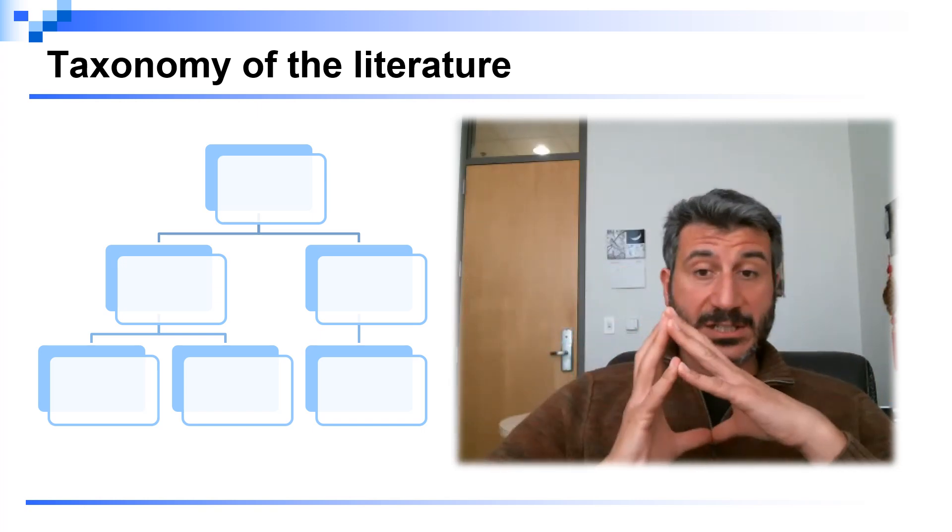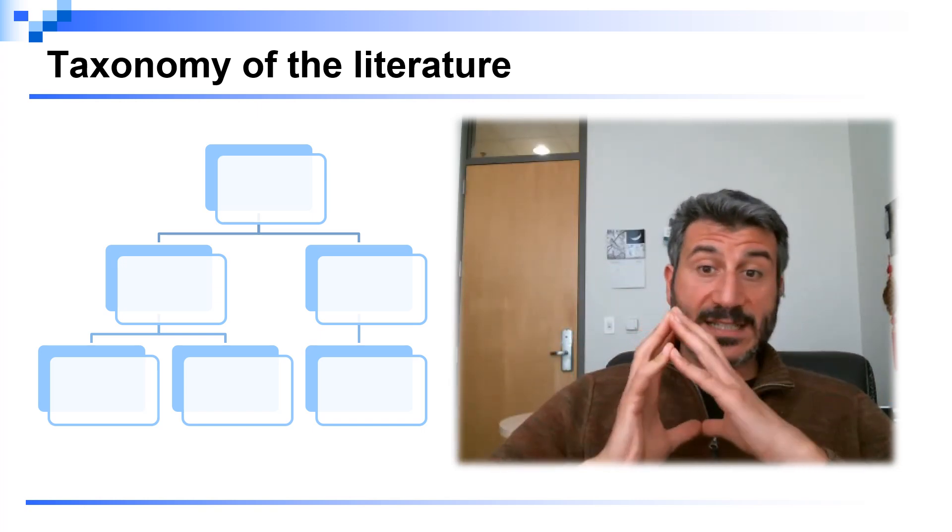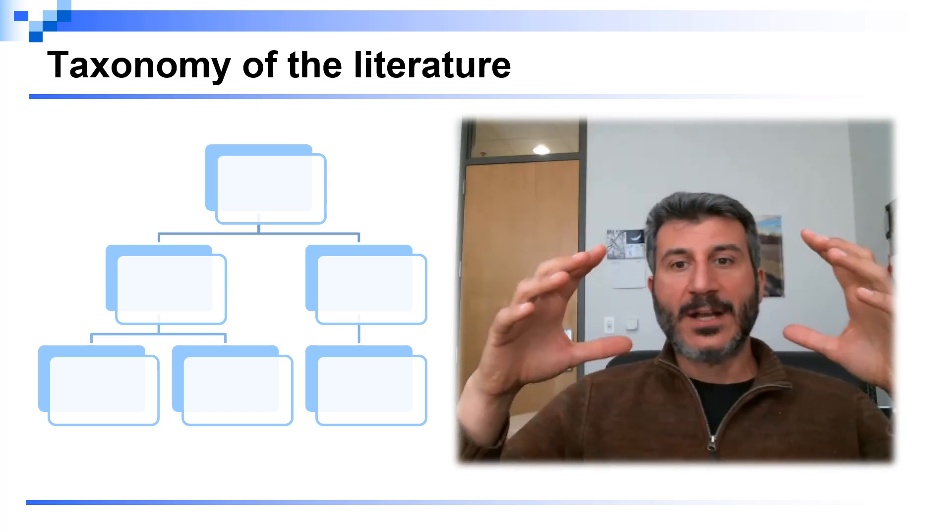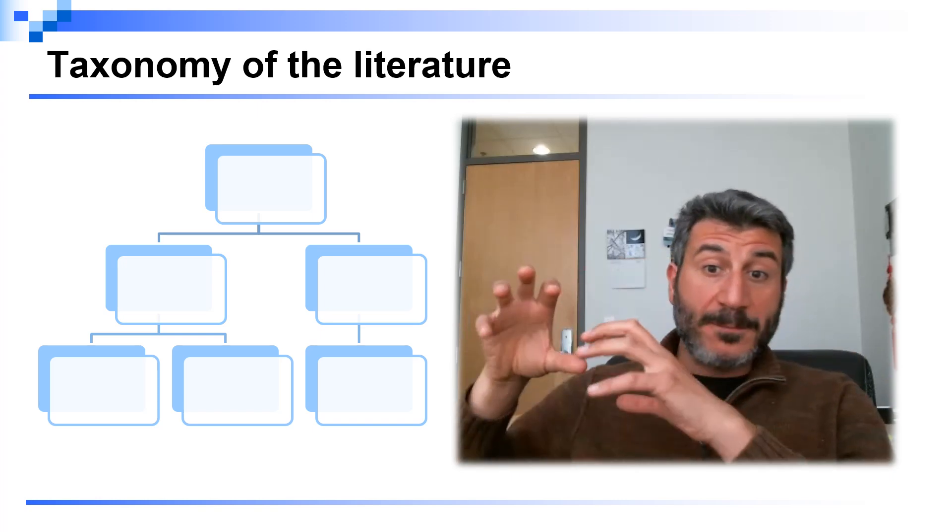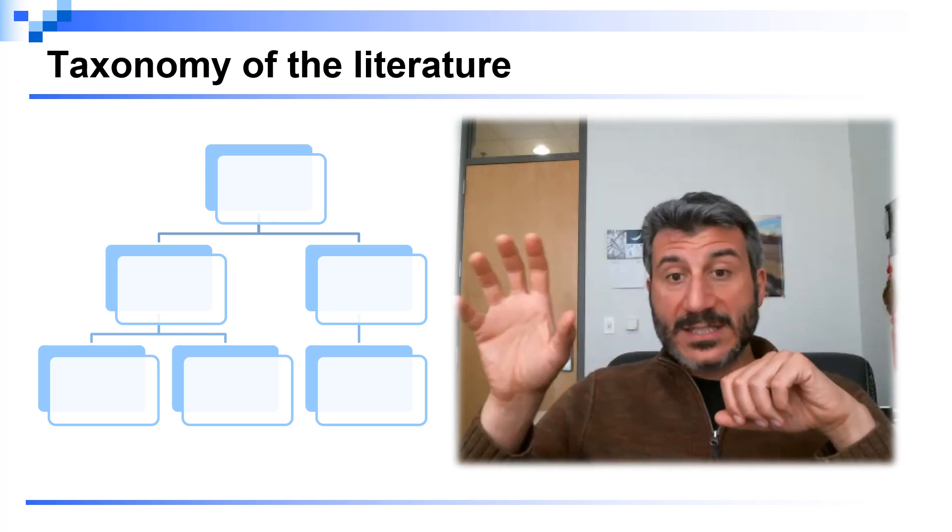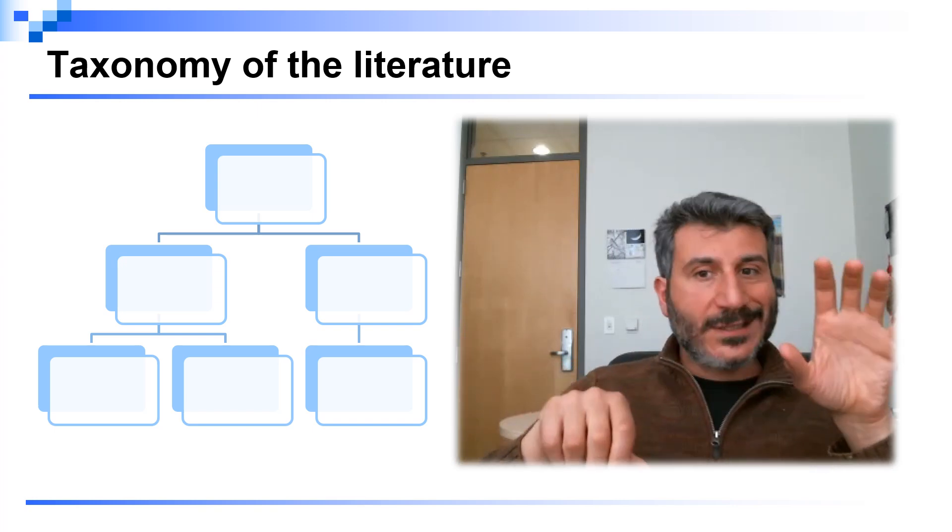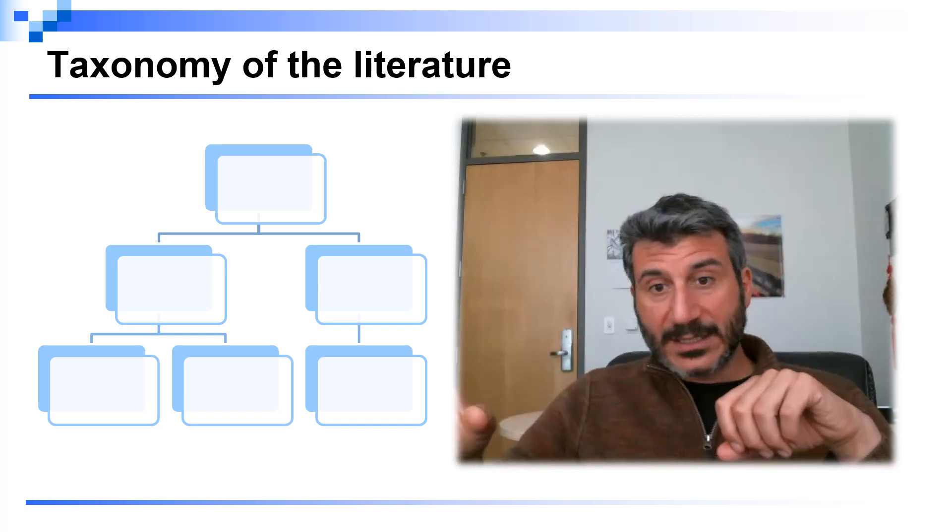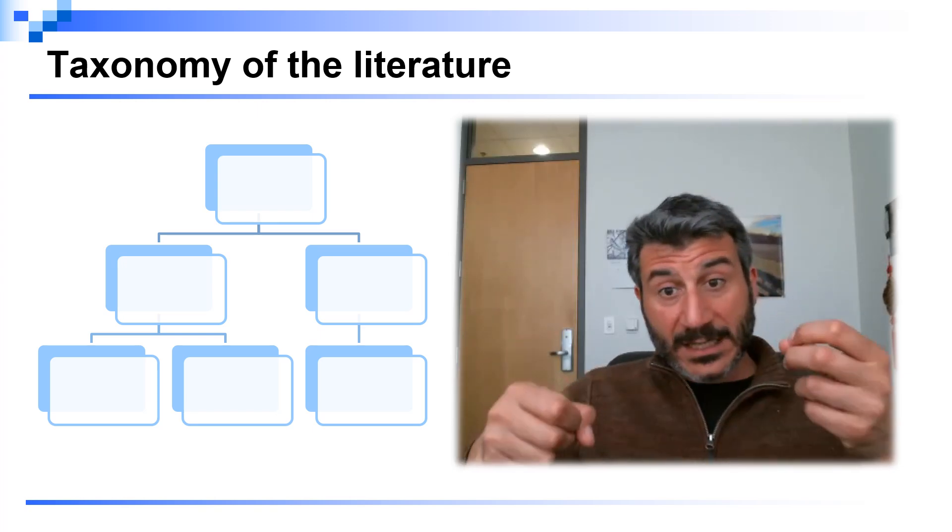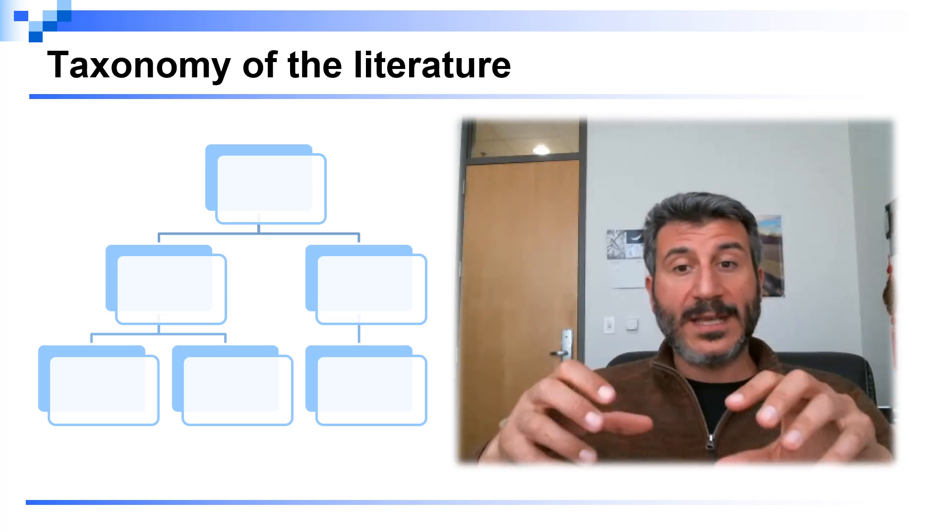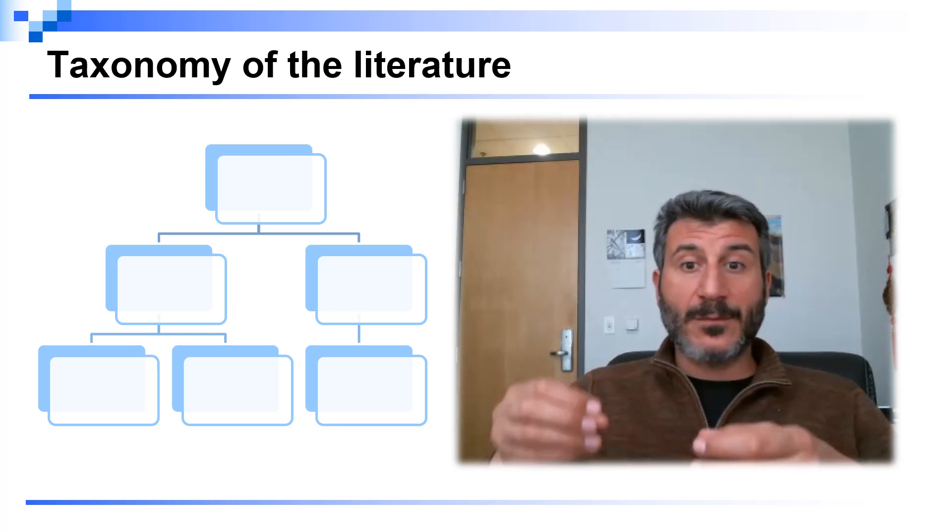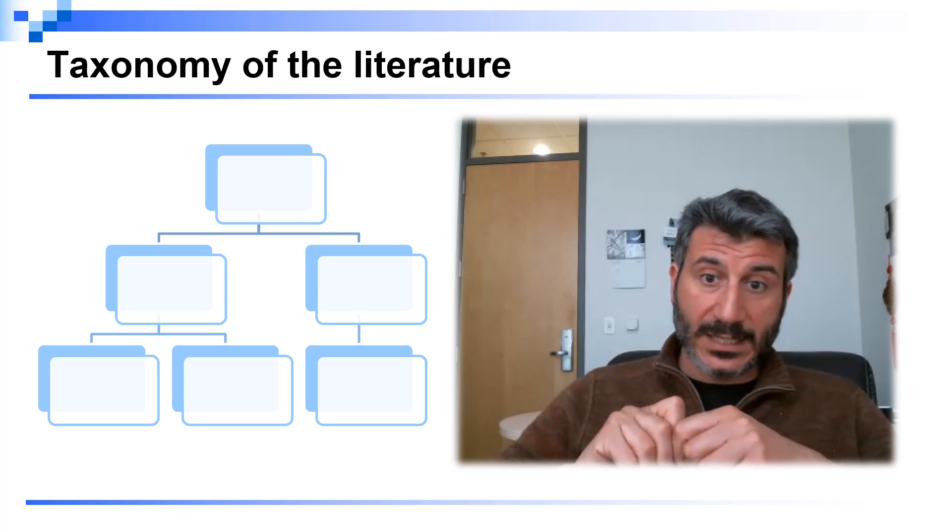So a very interesting and informative related work section provides a taxonomy of the literature. So an organization of the literature that groups the different papers that have been proposed according to, for example, the assumptions that they make, or the system model that they use, or the type of problem that they are considering, or the solution that they are adopting. And this is something that requires some thinking, some work, and you should spend time on it in order to make that section meaningful, interesting, and well motivating the work that you are proposing in this paper.